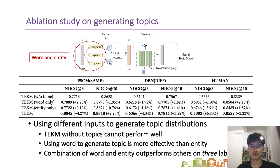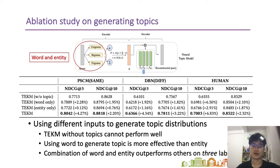In our work, we input both query words and entities into the neural topic model, so we conduct ablation by controlling different inputs. The first variant removes the neural topic model component entirely. The second and third variants use query words and entities individually. We find that the model without topics cannot perform very well, that using words to generate topics is more effective than using entities, and that the combination of words and entities outperforms all other methods on all three relevance label settings.